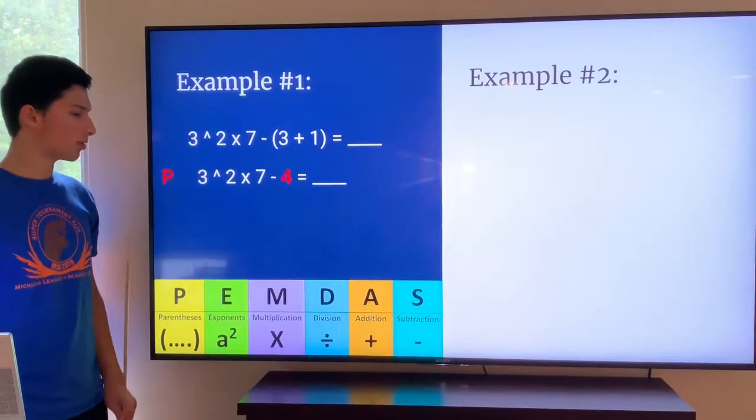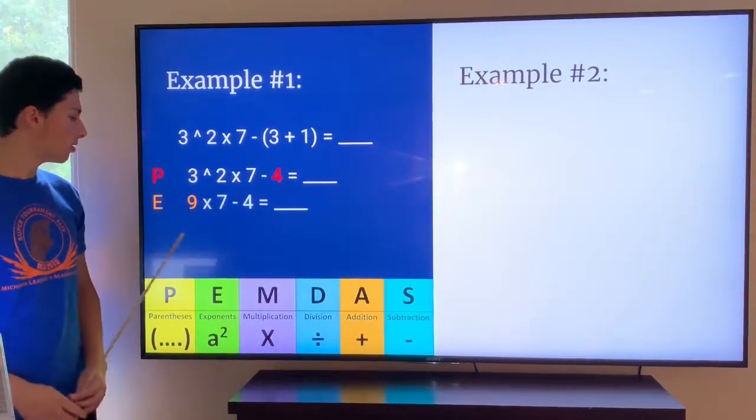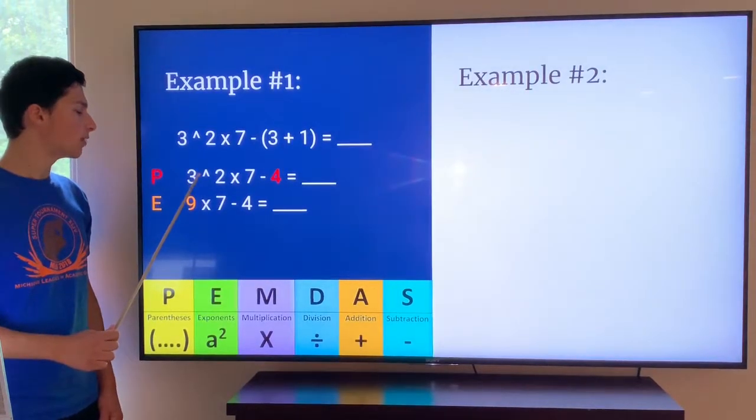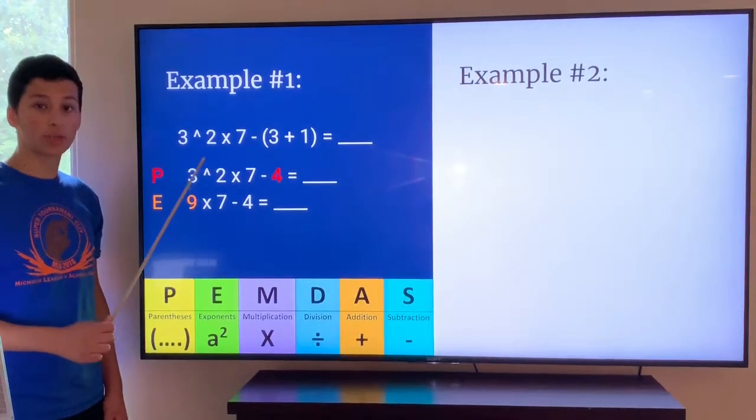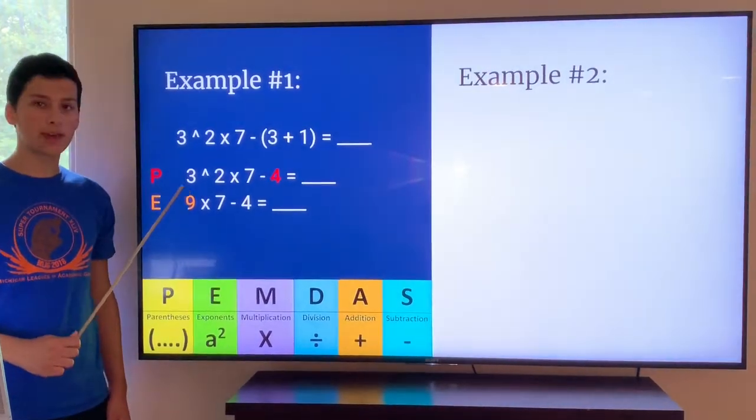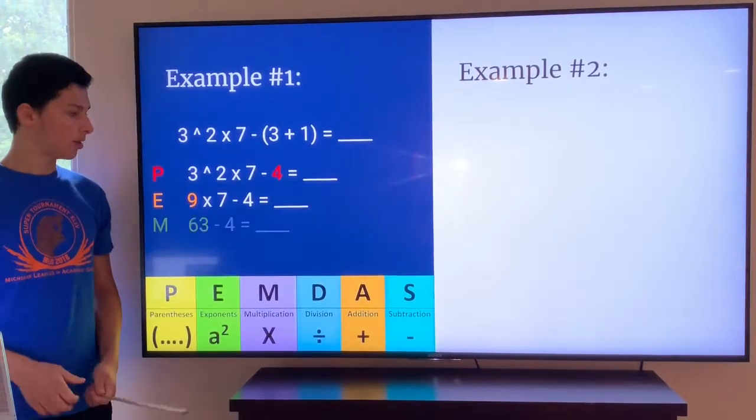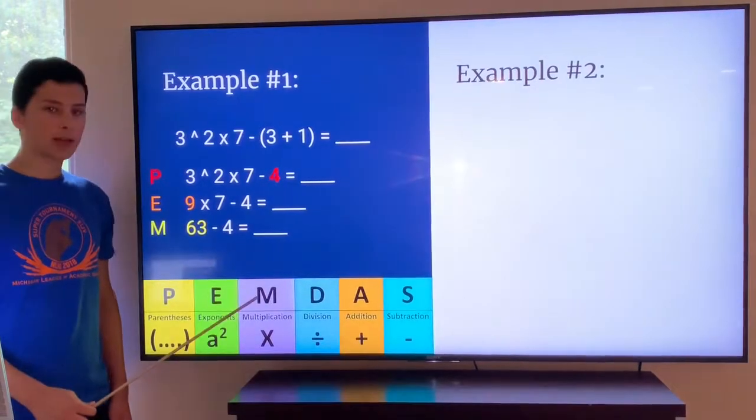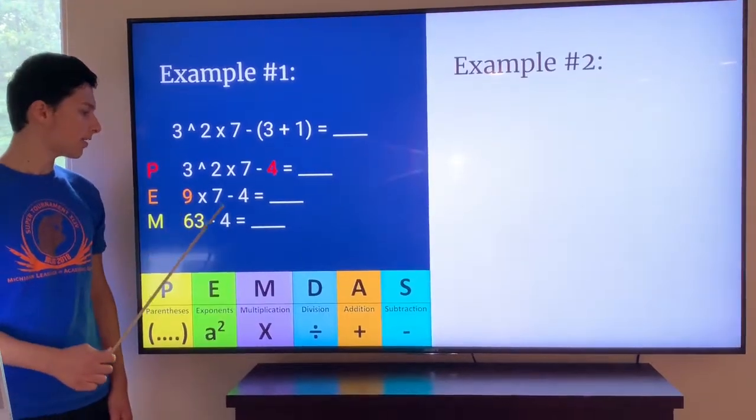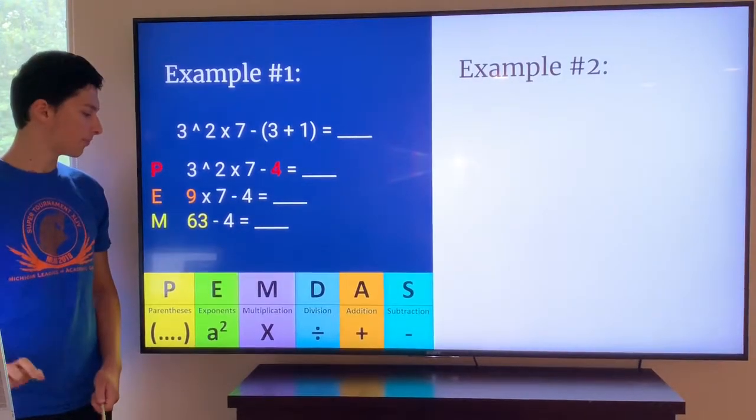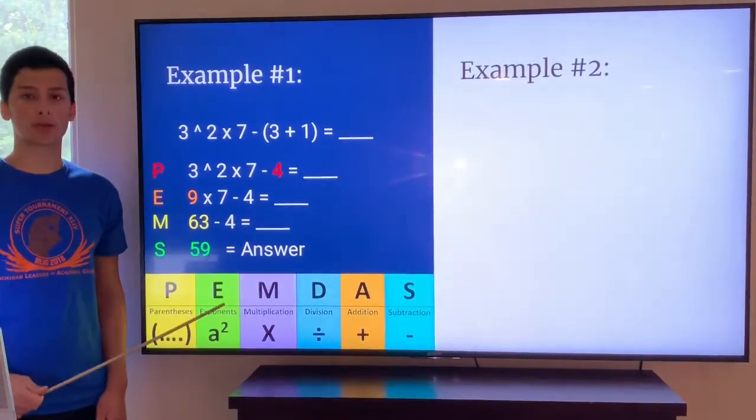Next up is exponents. We can see here that there's a power sign, so we find the value of three to the power of two, which is nine. So now we have nine times seven minus four. Now we move on to multiplication. Nine times seven is 63. And finally, we have subtraction. 63 minus four is 59, and that's the answer.